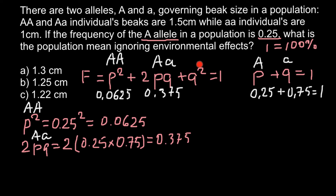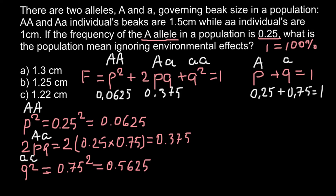Now we can find the frequency of the homozygous recessive genotype, that is small a, small a. Q² stands for the homozygous recessive genotype. Q is 0.75, and we square this number to get 0.5625. When we add all three frequencies together — 0.0625 + 0.375 + 0.5625 — we get 1, confirming our calculations are correct.